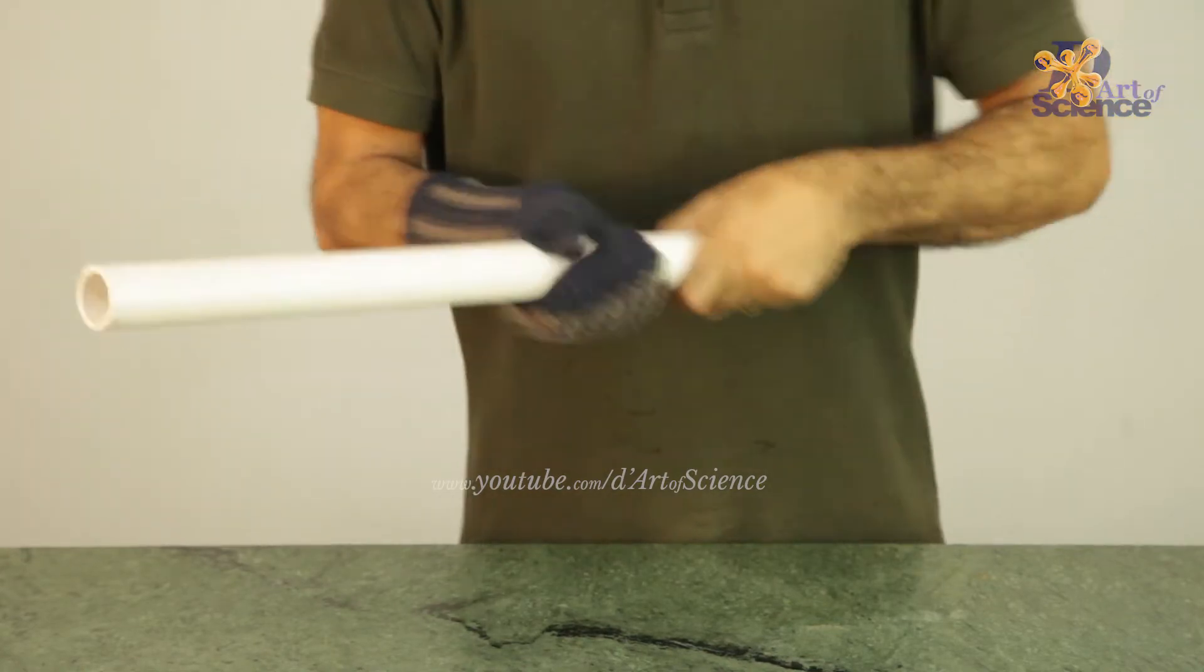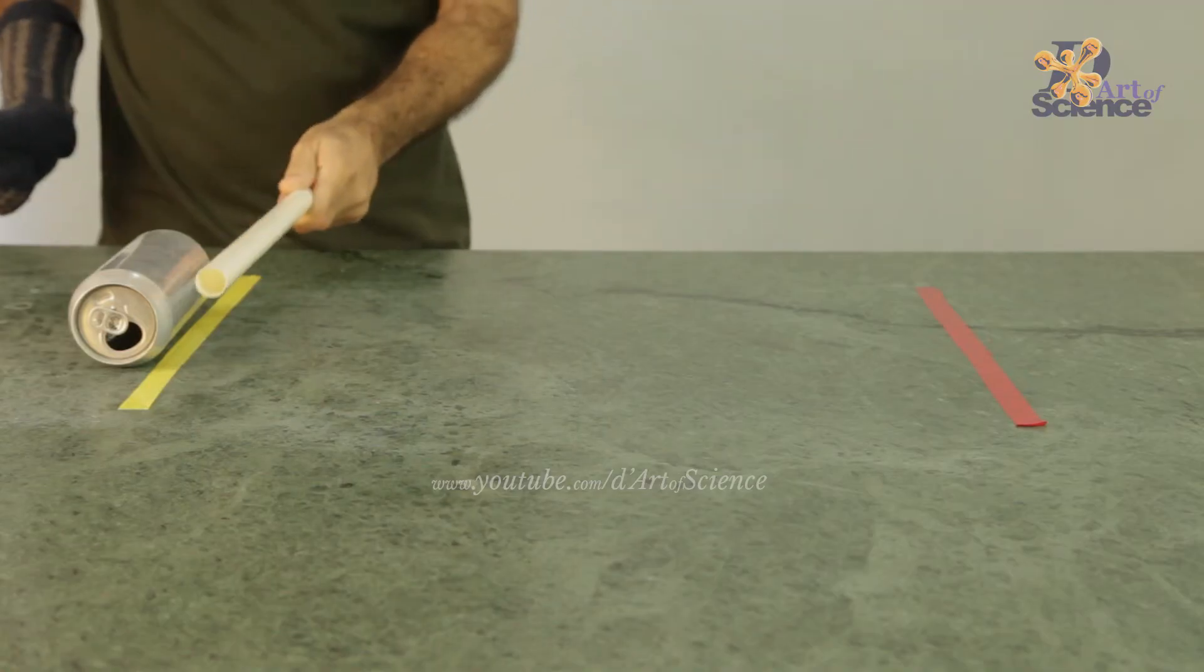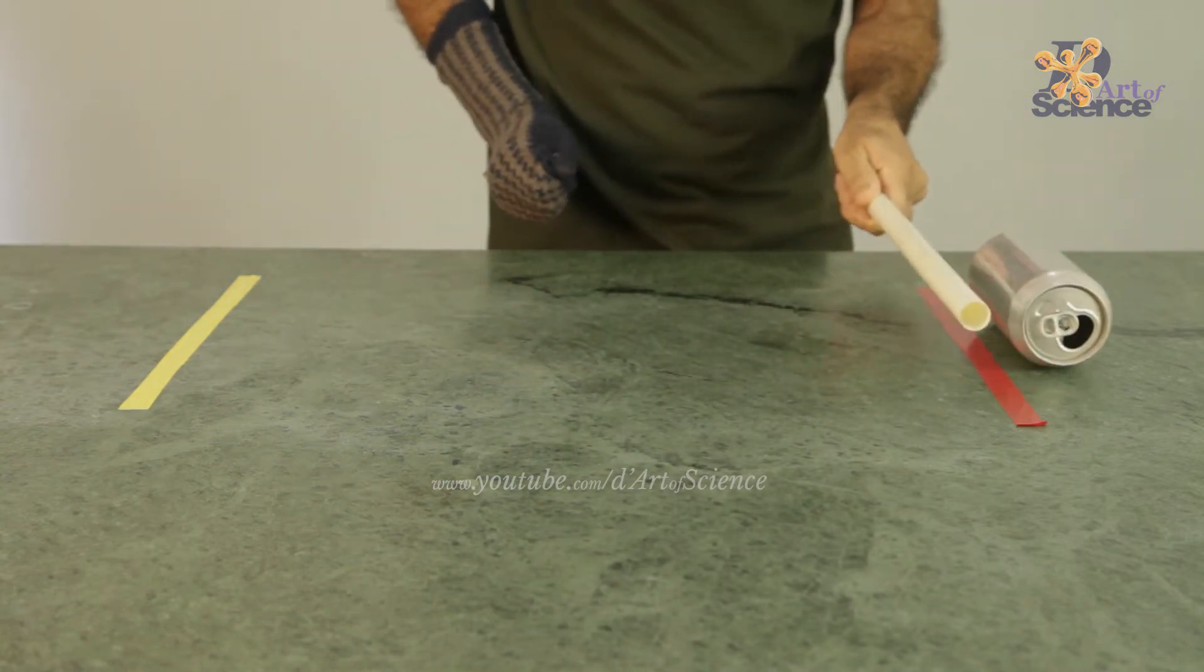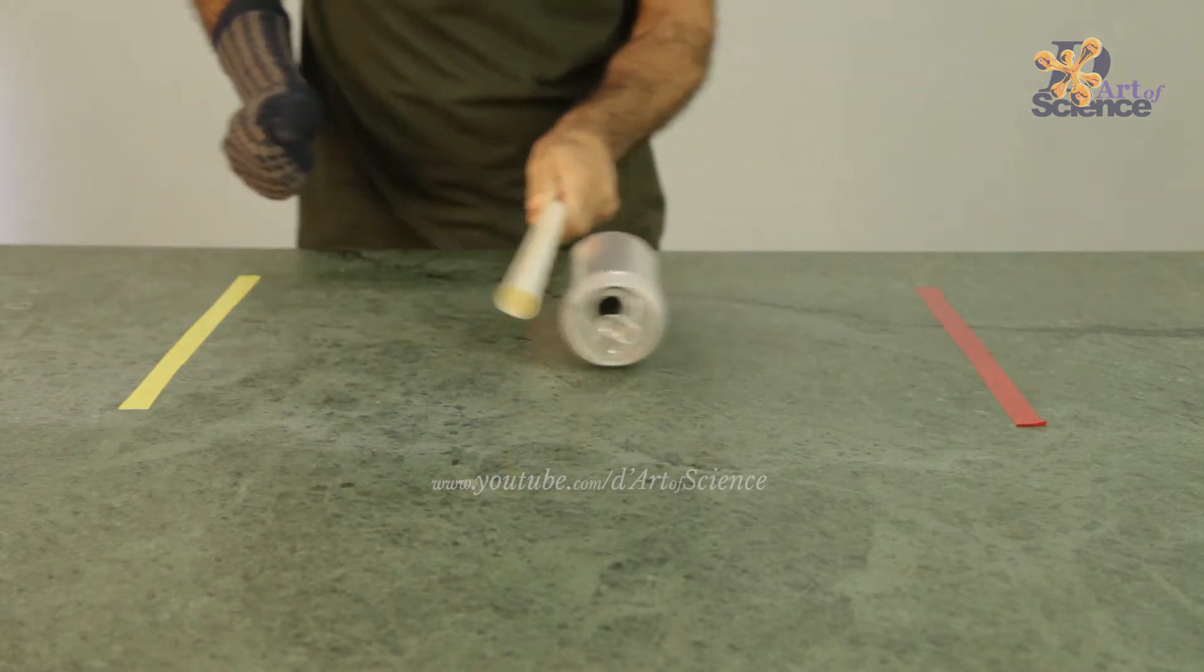I also mentioned that we'll have some fun and games with static. One game is to pull the can without touching it. All you need to do is develop a lot of static and then use that to pull a can on the table.